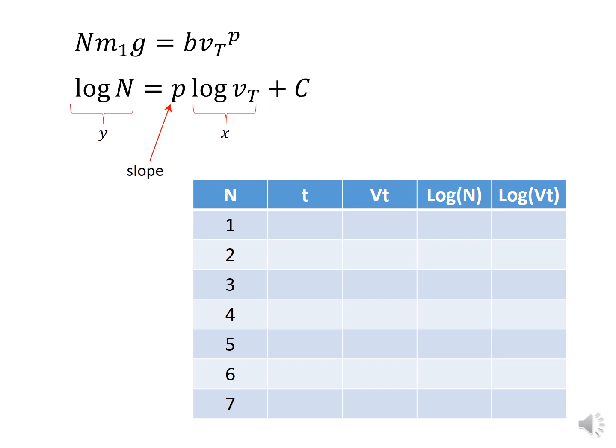I get the log of the number of filters, log n, equals that power P times the log of the terminal speed, plus all the constants. We're not interested in the constants in this case.